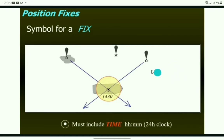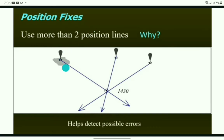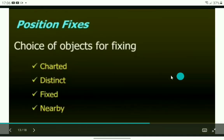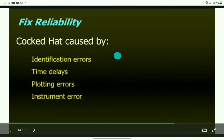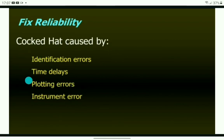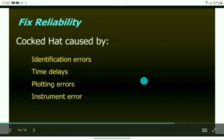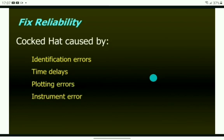Although you need a minimum of two position lines for a fix, you should always endeavor to obtain a third for a greater degree of accuracy. Along your course you may find many charted objects to choose from. Wherever possible, attempt to select a good combination of these objects. Fix reliability is important because a cocked hat can be caused by identification errors, time delays, plotting errors, or instrument errors — which is why it is a good idea to use more than two or three position lines.